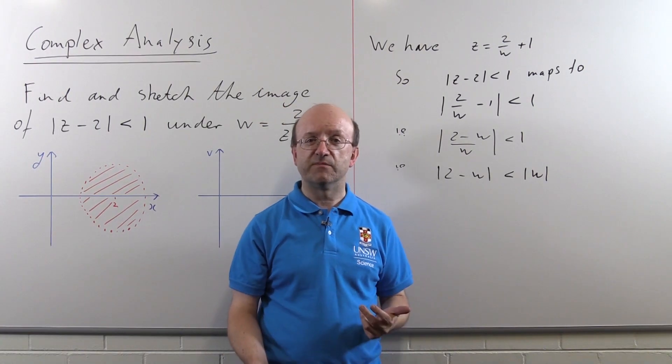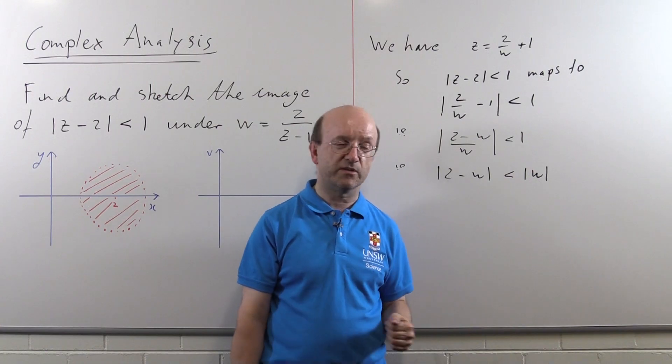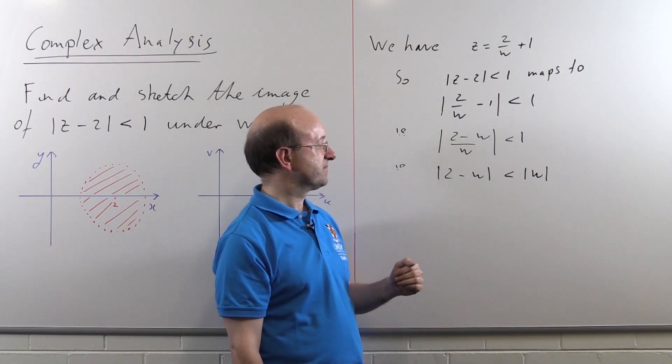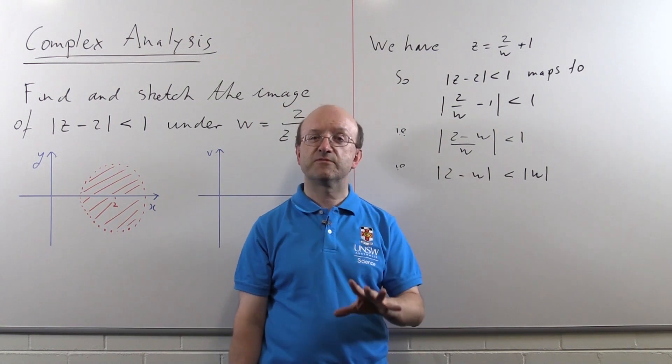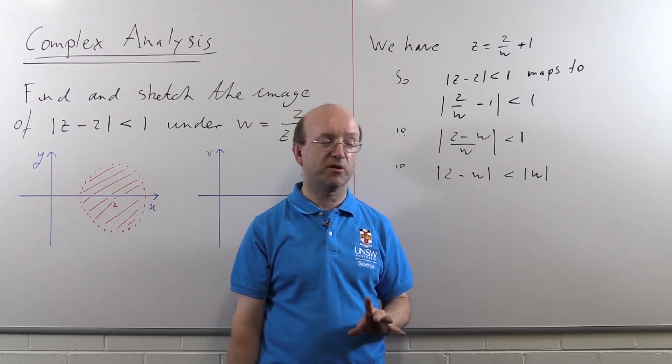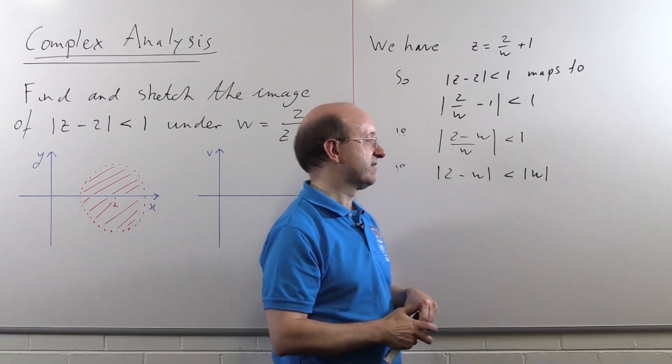But we can do it algebraically if that's what you'd rather do. What we do is we'd square both sides of this. And that's perfectly legitimate because both sides are positive. And then we rewrite w as u plus iv and see what we get.